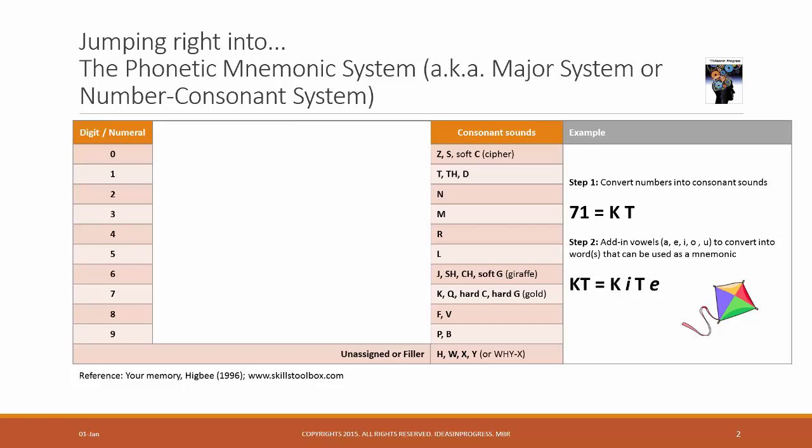The corresponding consonant sound, which you could look into the table on the left side, is K and T. And in step 2, we basically add in the vowels to form a word or a collection of words that represents that number. So in our example, KT, we can insert the vowel I and E to form the word Kite.